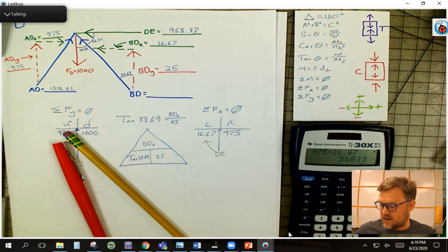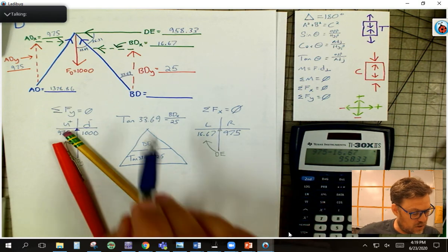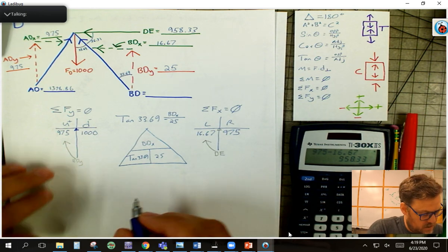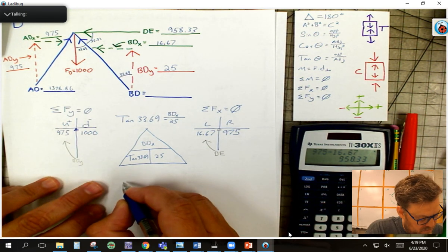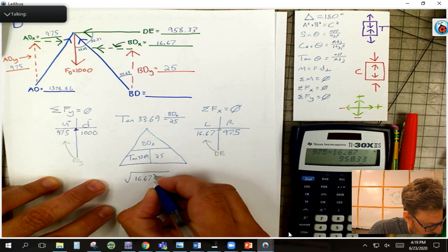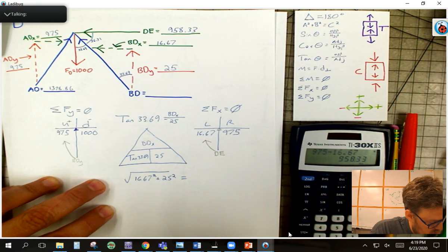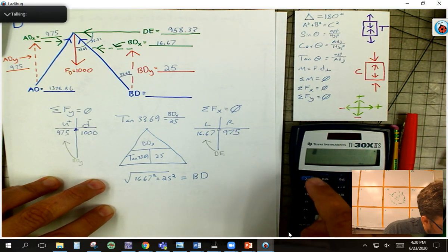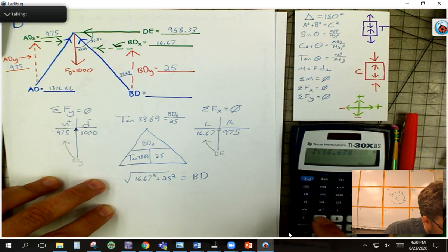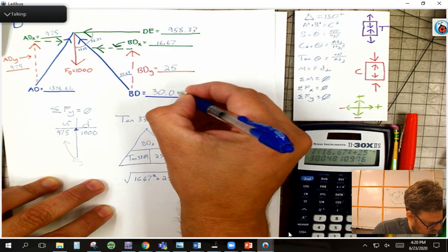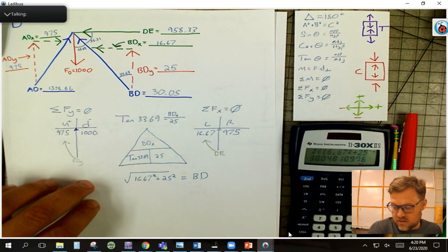Last thing I've got here on joint D is I need to solve for BD. Not too bad. I just need to use the old Pythagorean theorem here, and so I'm going to use BDX and BDY. So in my calculator, I would type in square root 16.67 squared plus 25 squared equals, and that would be BD. So let me do that, clear, square root button. I'm going to go 16.67 plus 25, enter, and I get 30.05. We'll round up to 5 and call that good.